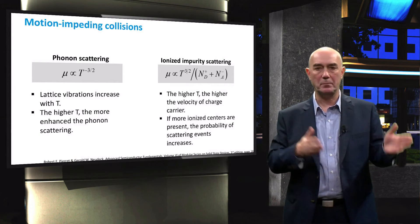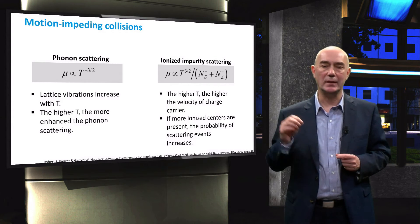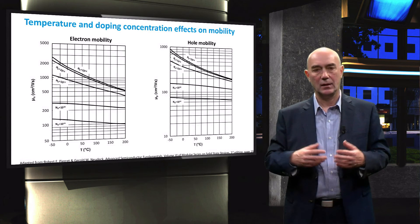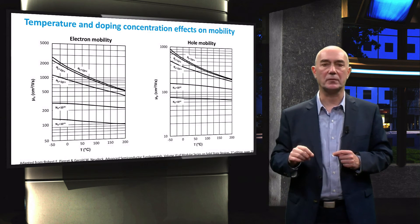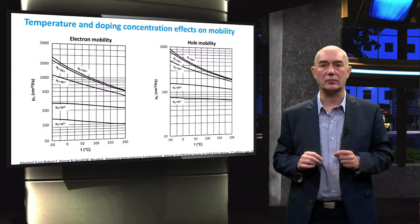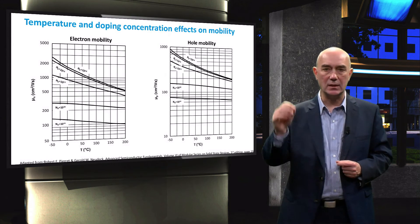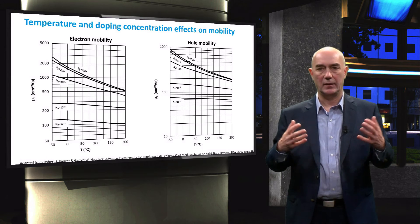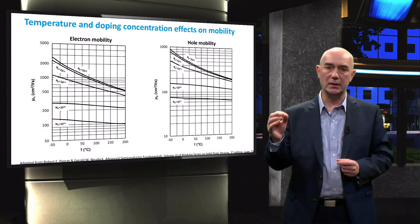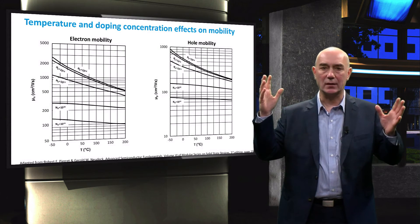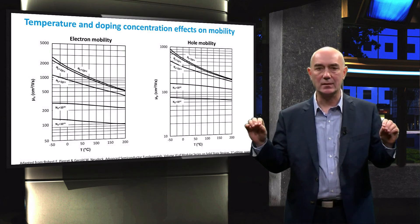These two effects — temperature and dopant concentration — are in competition and we will look at their net effect. Here, the mobility of electrons and holes in crystalline silicon are plotted as a function of temperature with different doping concentrations. Overall, we can observe that mobility decreases with temperature, meaning the dependence on phonon scattering dominates. However, as the doping increases, you can clearly see that the mobility becomes lower and the temperature dependence is less significant.